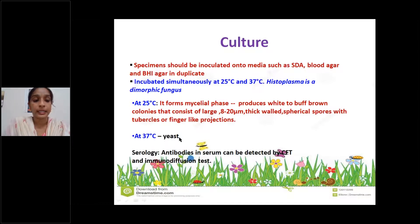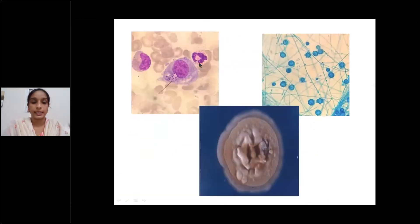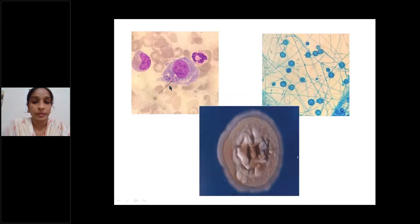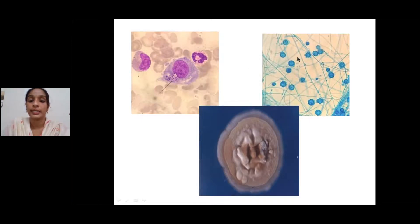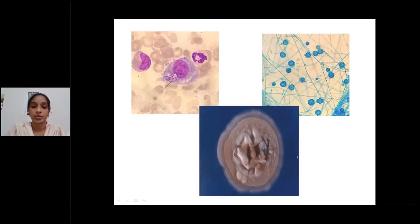The microscopy image shows intracellular yeast cells — small yeast cells present within the cytoplasm of macrophages or monocytes. This is from a primary smear. The LPCB preparation shows the mycelial form with mycelia bearing finger-like tuberculate projections — these are the spores. This is the culture morphology of Histoplasma capsulatum on SDA, showing white to buff-brown colored growth.